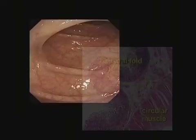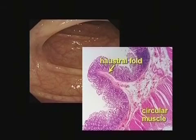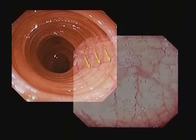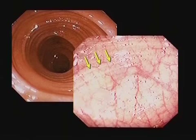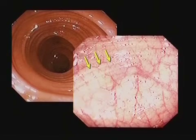Haustral folds run transversely over the underlying muscle layer, but muscle fibres can also give a circular impression, or they can cause reflections in an arc, which gives the clue where to steer even in close-up.